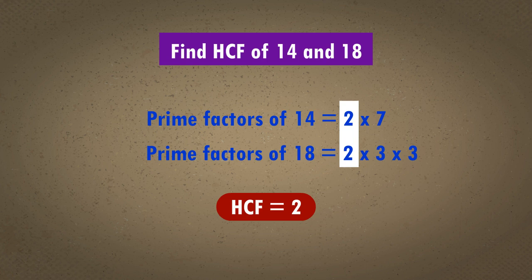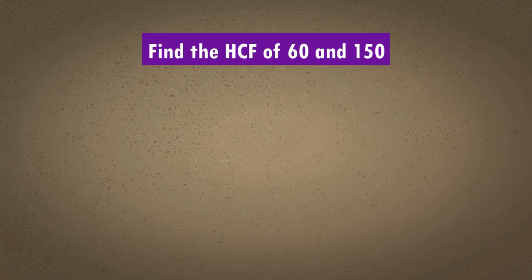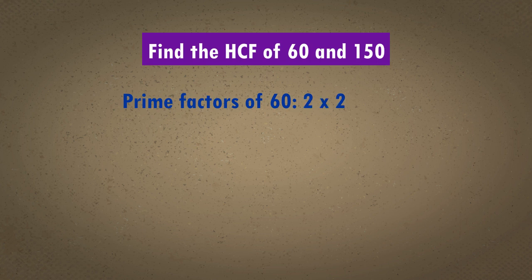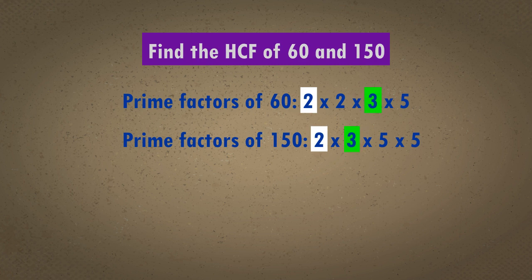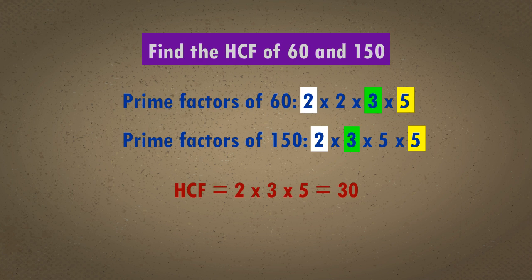Let us take another example. Find the HCF of 60 and 150 using prime factorization method. The prime factors of 60 are 2 × 2 × 3 × 5. The prime factors of 150 are 2 × 3 × 5 × 5. We can see that the common prime factors are 2, 3, and 5. The highest common factor is the product of the common prime factors. Therefore, the HCF of 60 and 150 is 2 × 3 × 5 = 30.